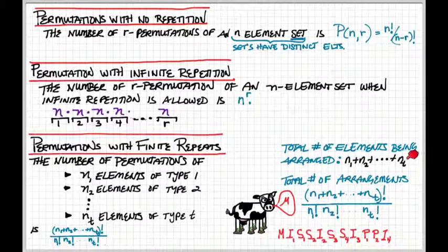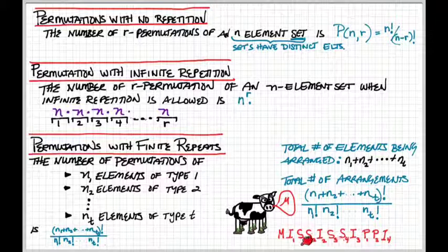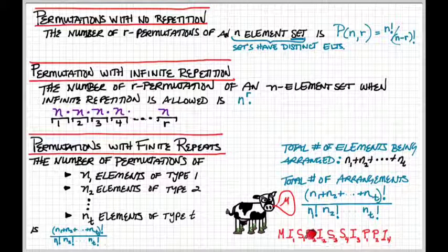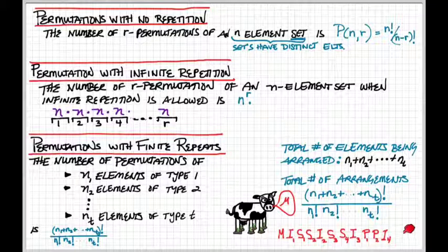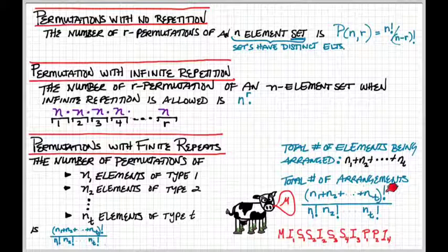You can start by pretending all those elements are distinct. So look what I have here at Mississippi. I have I number 1, I number 2, I number 3, and I number 4. S number 1, S number 2, S number 3, S number 4, and so on. So I can rearrange all of these distinct objects. If the total number of objects is N1 plus N2 plus Nt, it would be that number factorial.